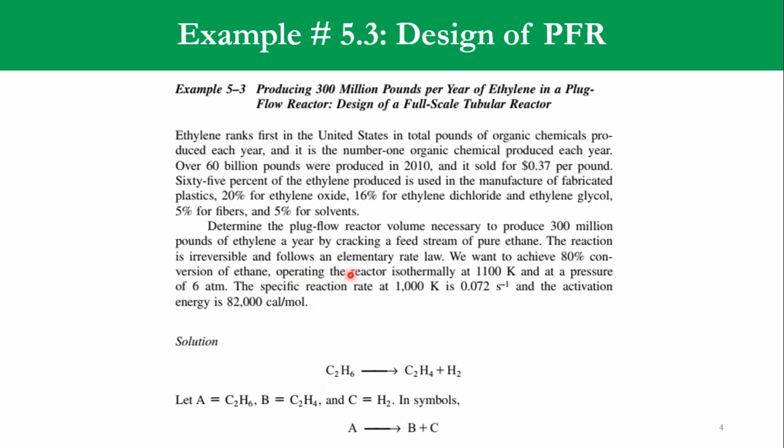We want to achieve 80% conversion of ethane. The value of x is 0.8. Operating the reactor isothermally at 1100 Kelvin, which means that the feed temperature is 1100 and the reactor temperature is 1100 Kelvin as well, and at a pressure of 6 atm.